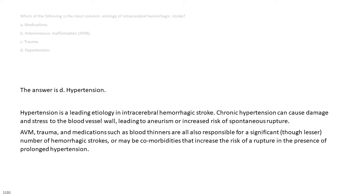The answer is D. Hypertension. Hypertension is a leading etiology in intracerebral hemorrhagic stroke. Chronic hypertension can cause damage and stress to the blood vessel wall, leading to aneurysm or increased risk of spontaneous rupture. AVM, trauma, and medications such as blood thinners are all also responsible for a significant, though lesser, number of hemorrhagic strokes, or may be comorbidities that increase the risk of a rupture in the presence of prolonged hypertension.